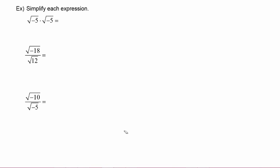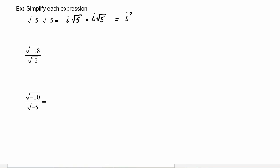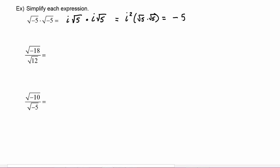In this next example we have to simplify each expression. We start with radical negative five times radical negative five. That first radical negative five we can write as i radical five, and the second is also i radical five. So we have i times i, which is i squared, times radical five times radical five. We know i squared is negative one and radical five times radical five is five, giving us negative five.